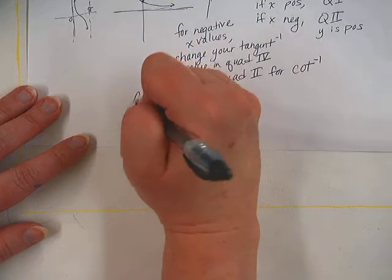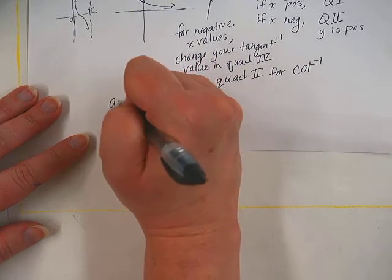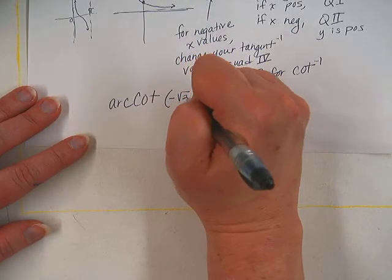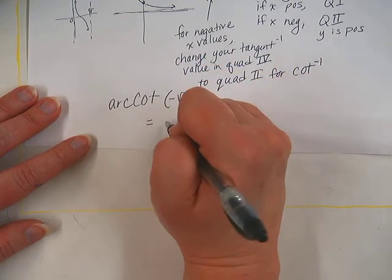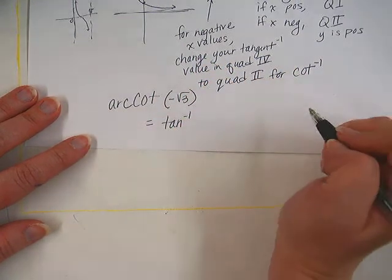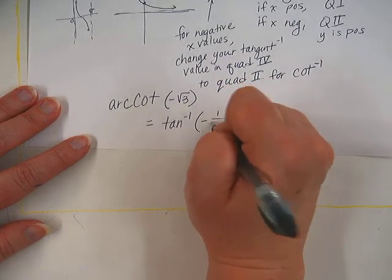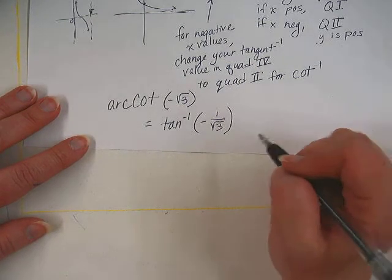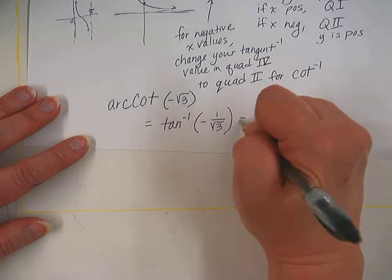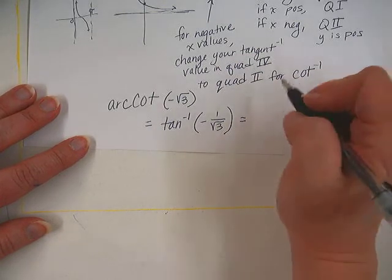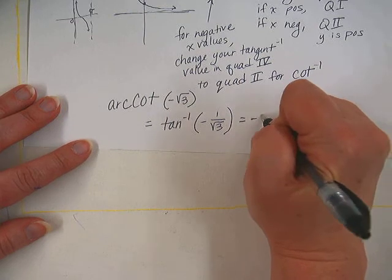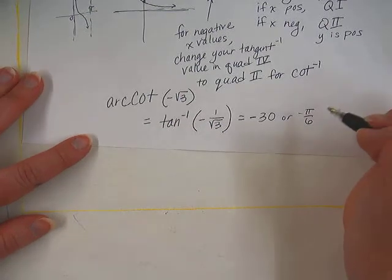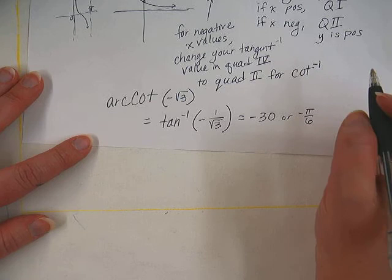So if I wanted to find the arc cotangent of negative square root of 3, I could do that by finding the inverse tangent of negative 1 over square root of 3, which is also square root of 3 over 3. That corresponds to a 30 degree reference angle. So for tangent, your calculator, if you did this in the calculator, would give you a negative answer, like negative 30 or negative pi over 6. However, that is not the correct answer for arc cotangent because these are in quadrant 4.